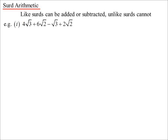So we just collect like, well instead of like terms, we collect like surds. So 4 root 3 minus root 3, 3 root 3. 6 root 2 plus 2 root 2, 8 root 2. No different to algebra.